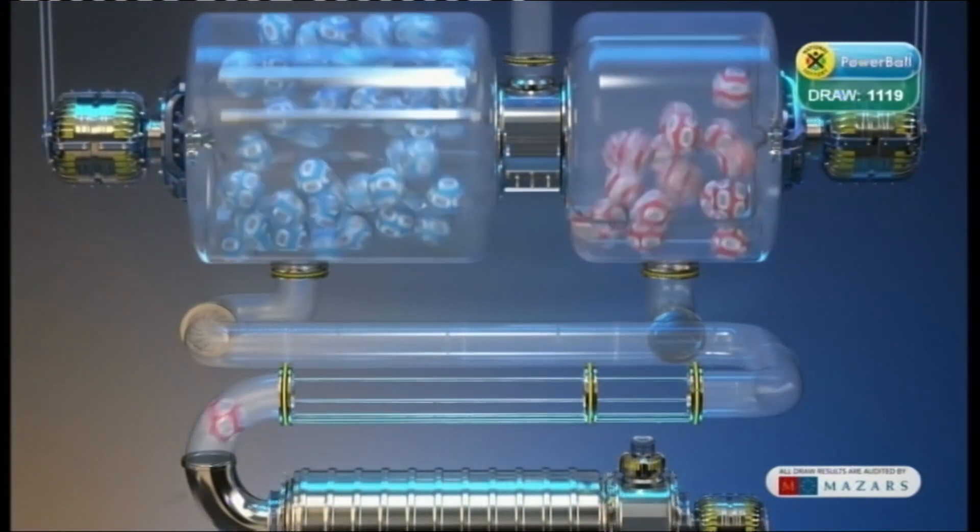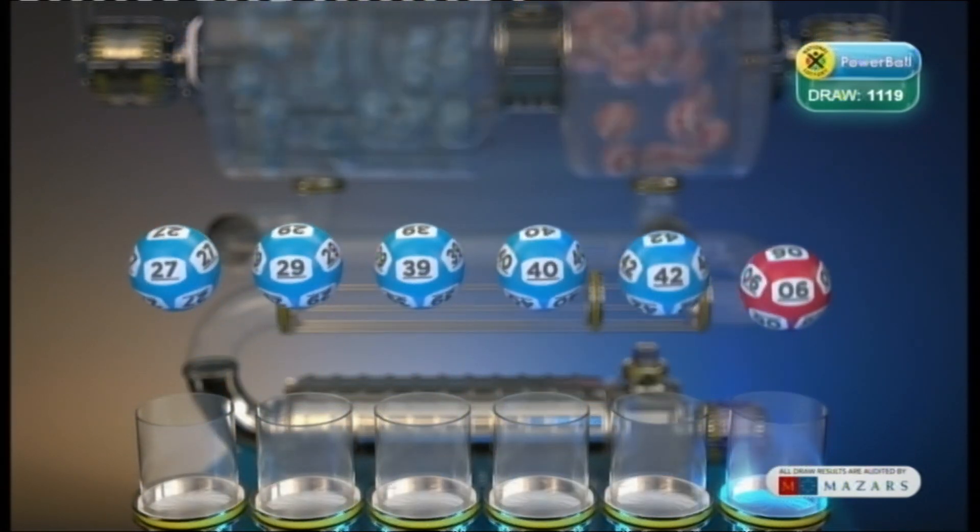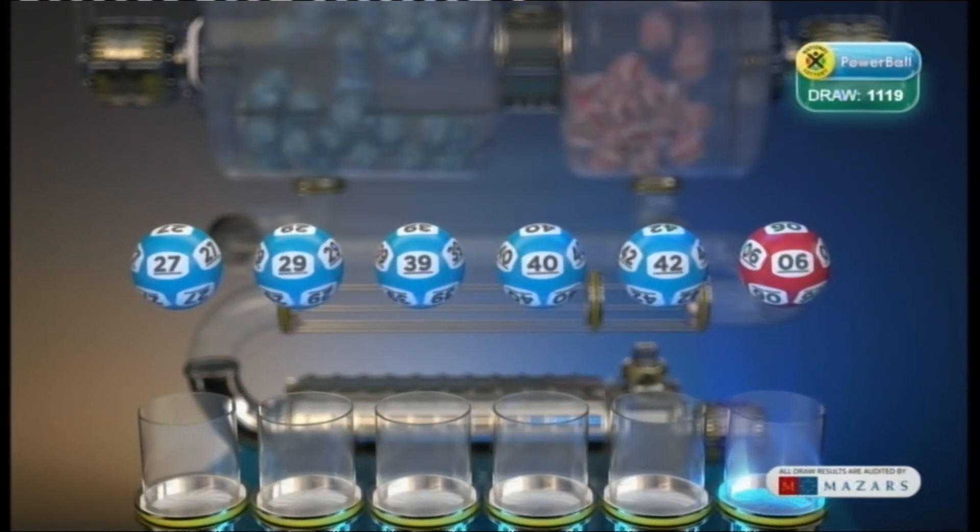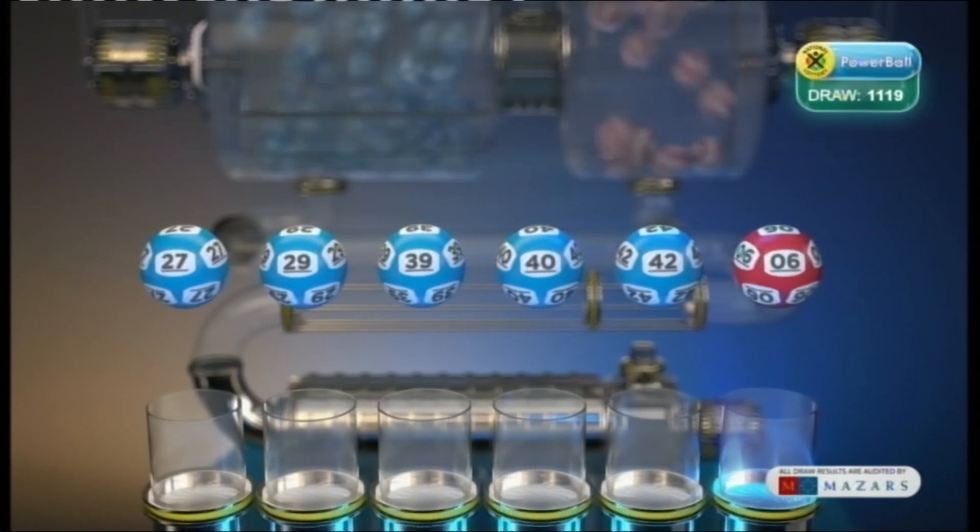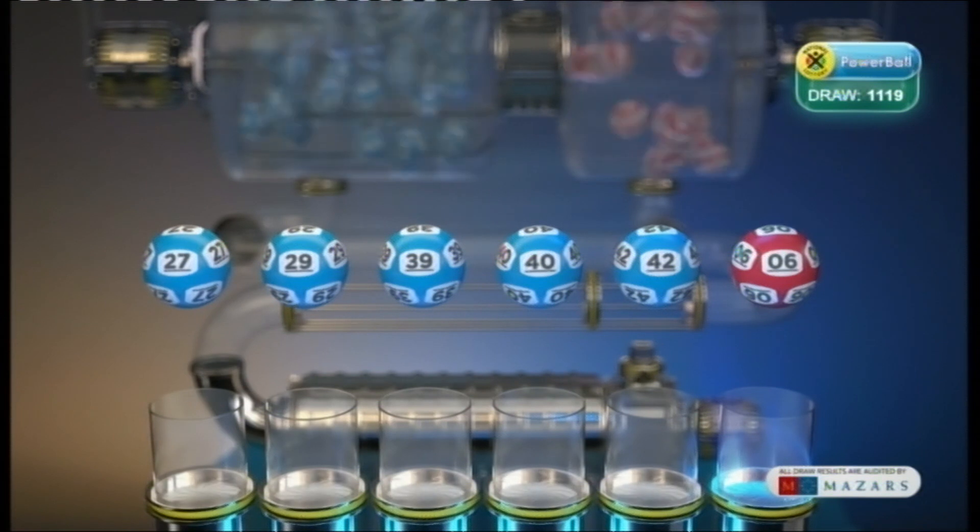Let's recap these numbers in numerical order. 27, 29, 39, 40, 42. And the Powerball is 6.